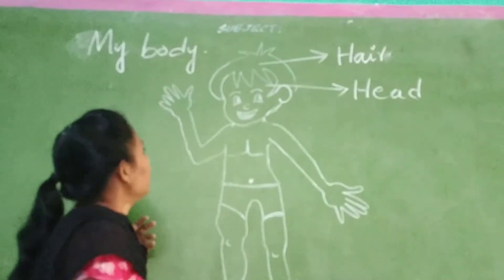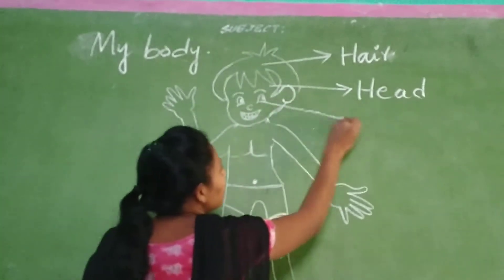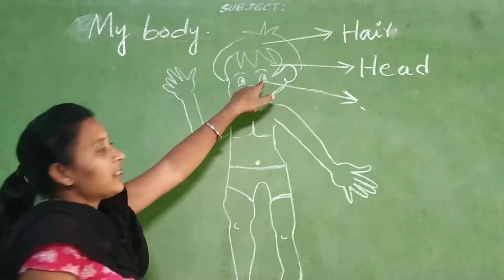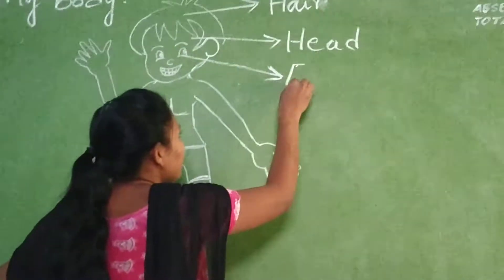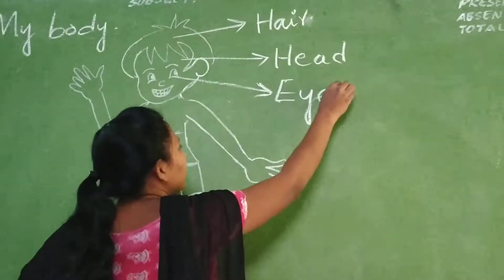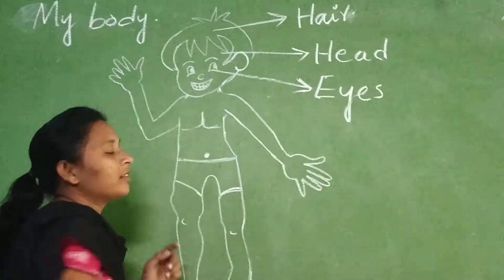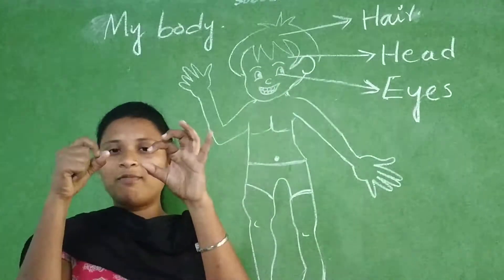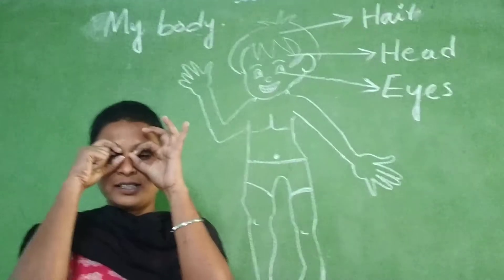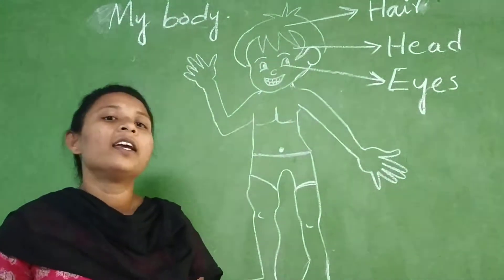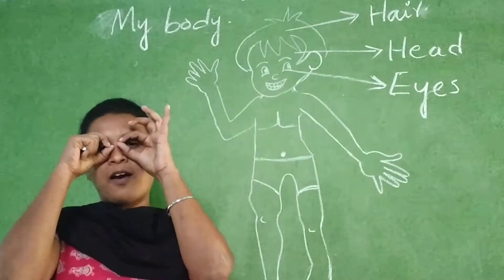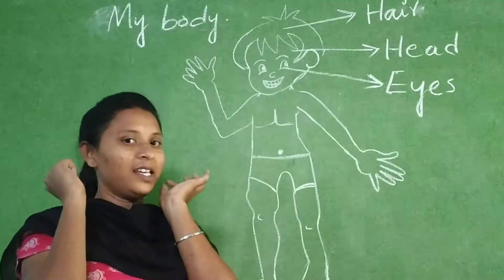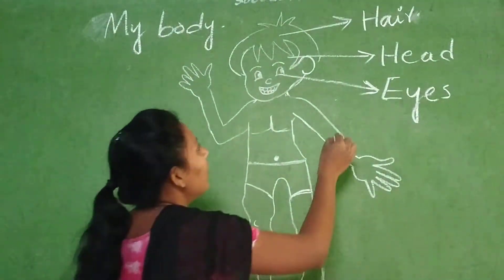Now see — these are eyes. Touch your eyes, children. Eyes. I can see with my eyes. How can we see? We can see only with our eyes. We can't see with our ears.